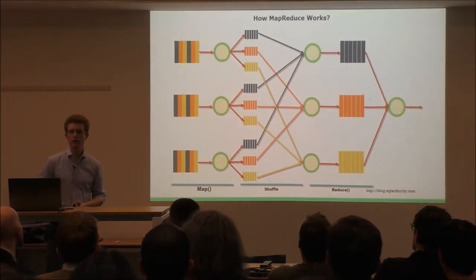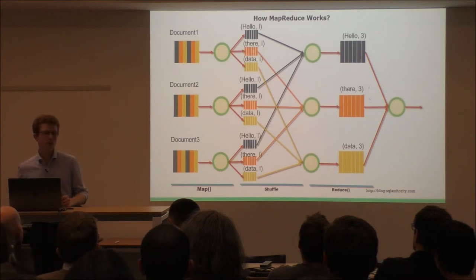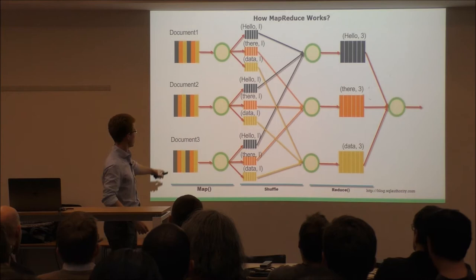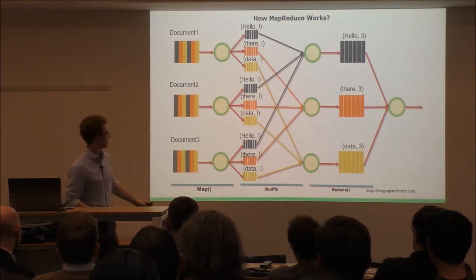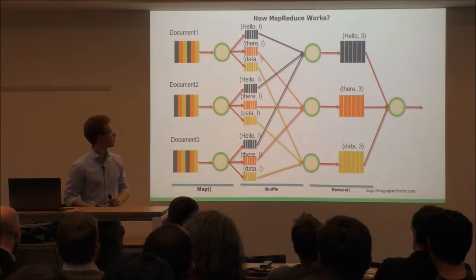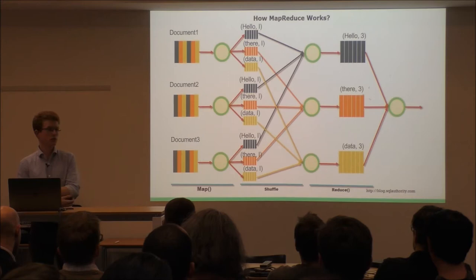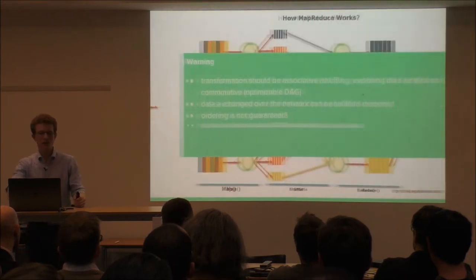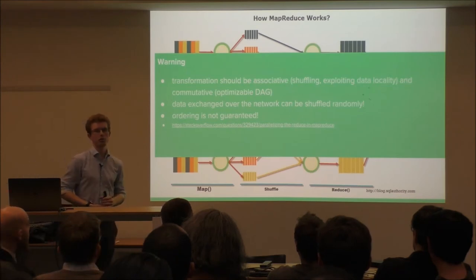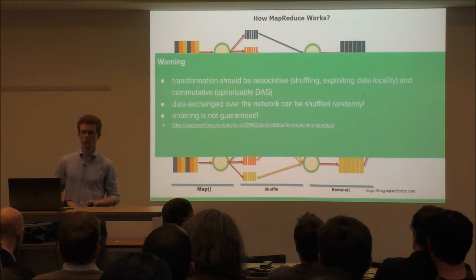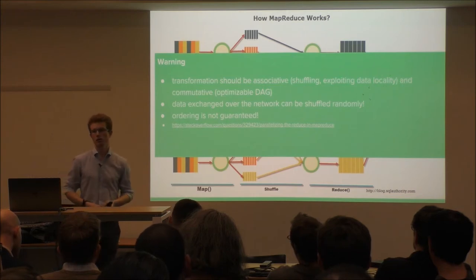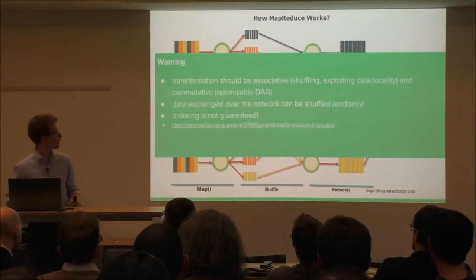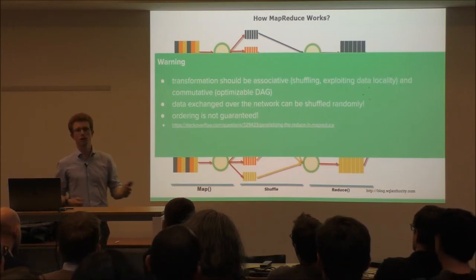How does MapReduce work? Let's use a simple word count example. You have a large number of documents, you map them to a tokenized form — for each unique word you map it to a token of one, then later reduce them. This is easy because it's associative and commutative, so you can exploit nice properties of distributing the calculation. If it's commutative you can even use a declarative SQL-like language, and the engine itself can optimize the execution graph of queries. The key takeaway: ordering of operations is no longer guaranteed because data traverses the network.